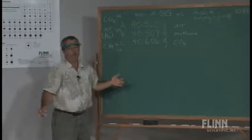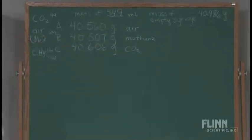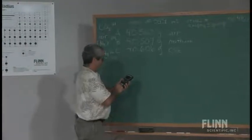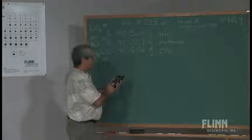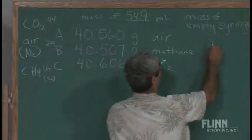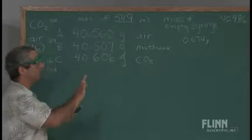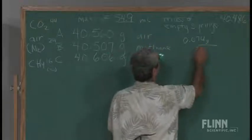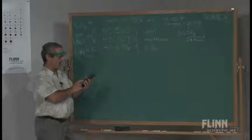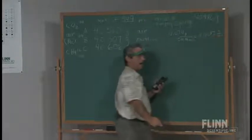But how close are these to the actual values? In order to get that, we're simply going to subtract the empty syringe from each of these three full syringes. We have 40.560 minus 40.486, so for the mass of A, 0.074 grams. Now I'm going to divide that by the volume. Our volume was 54.9 milliliters. We're going to do that each time to get the density. So divided by 54.9. And we have, this is a very good value, 0.0013 grams per milliliter for our air.